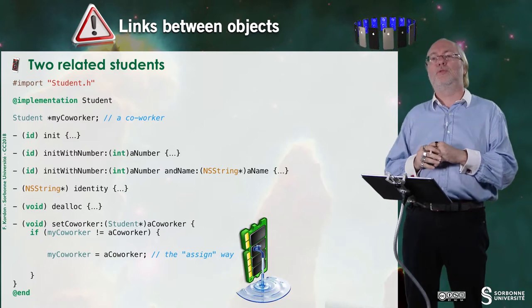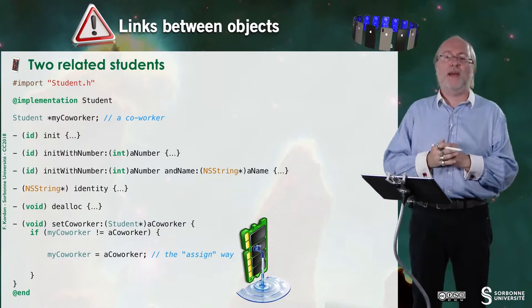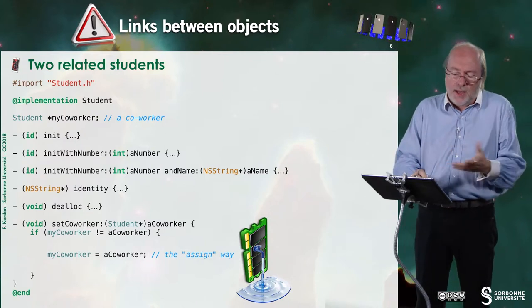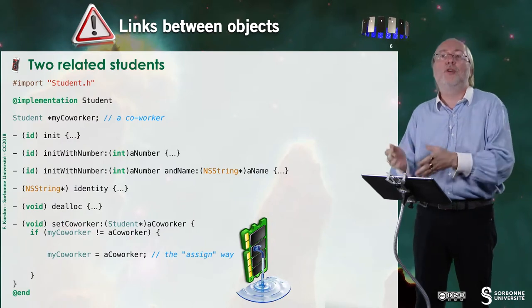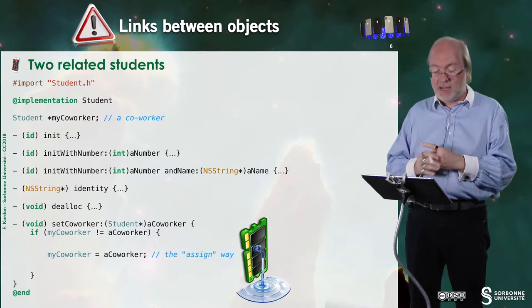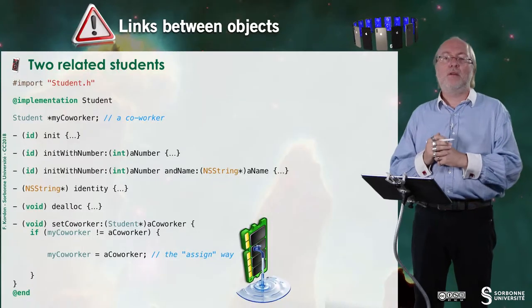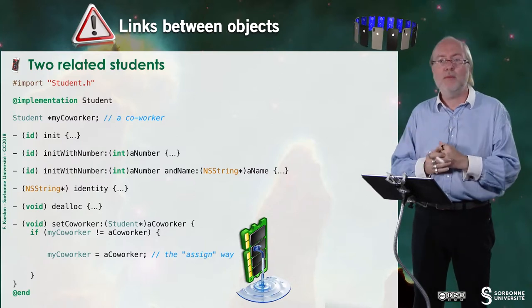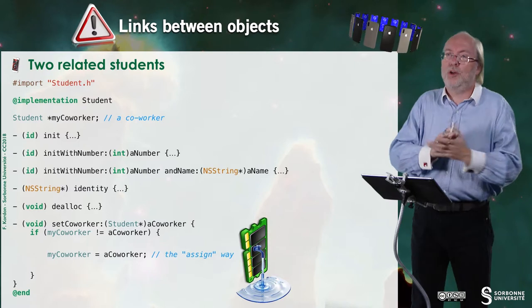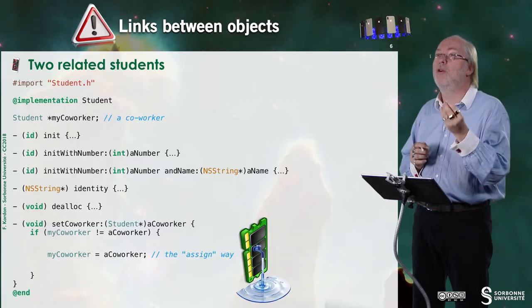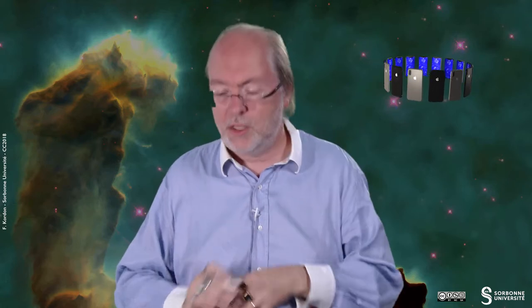I have a student s. I want s2 to be co-worker of s and I make s set co-worker s2. And here I said, the new co-worker is not already a co-worker. So I have to make a new assignment and I do this assignment. But this leads to a memory leak. Why? Because either the previous my co-worker was nil and then there is no problem. But if there were already another co-worker, I have done nothing with the reference counter on it. And so it means that I'm still supposed to be a co-owner and once the other student will be deallocated, the counter will not reach zero. So it's not good. You don't do that.